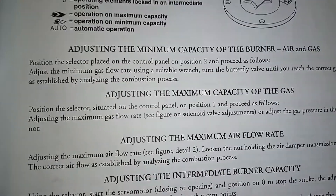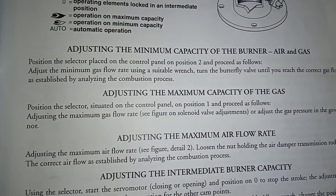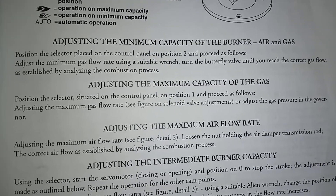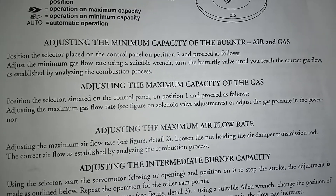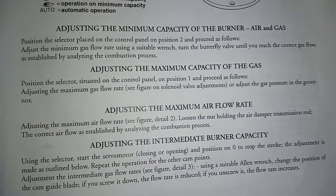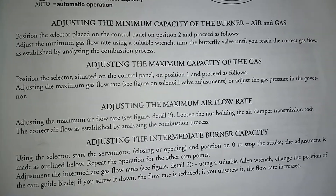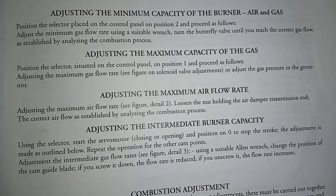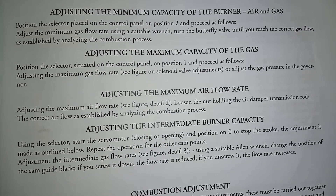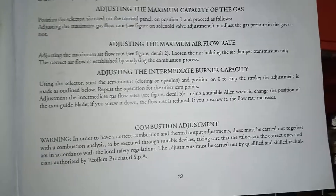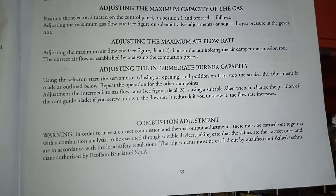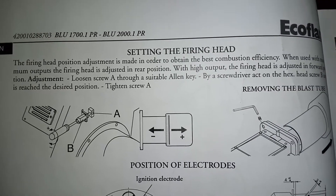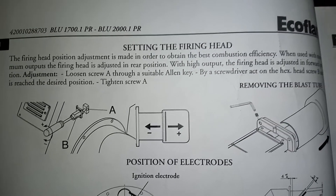Then we have adjusting the minimum capacity of the burner, air and gas. Adjusting the minimum capacity of the gas. Adjusting the maximum airflow rate and adjusting the intermediate burner capacity. And combustion adjustment. And then setting the firing head.